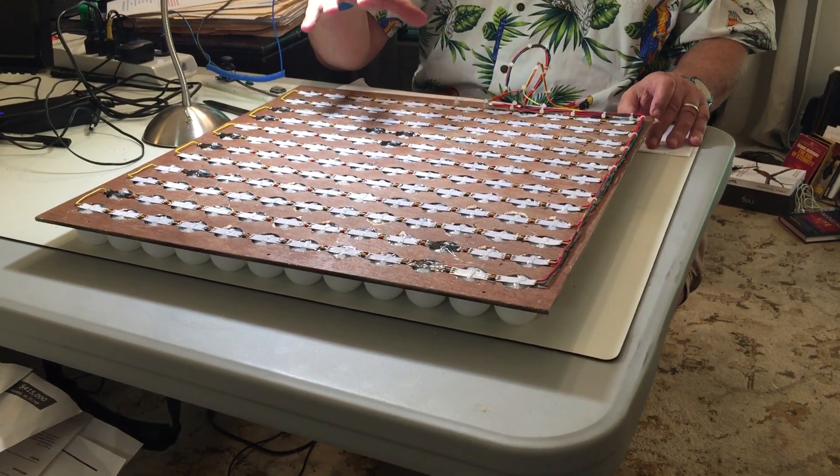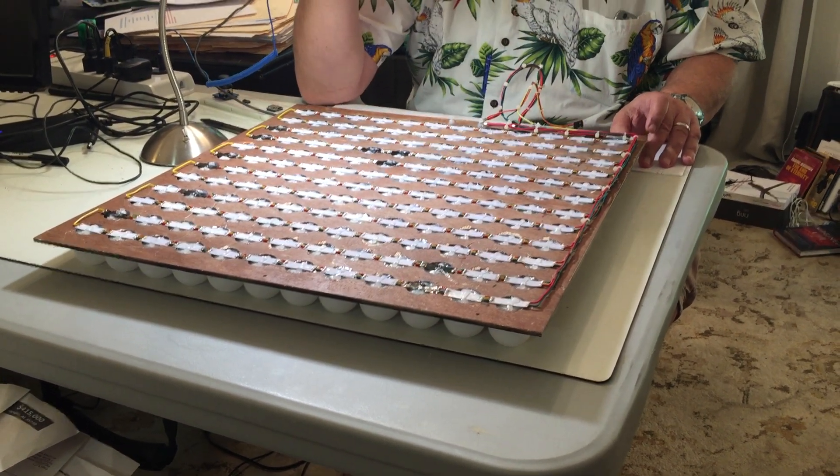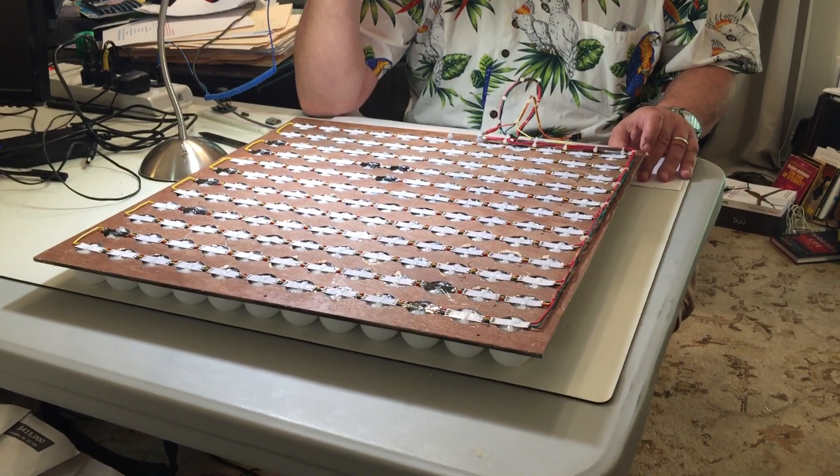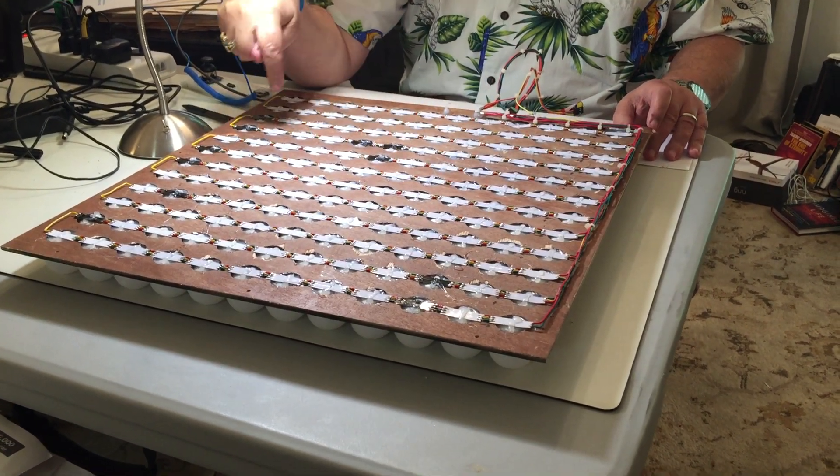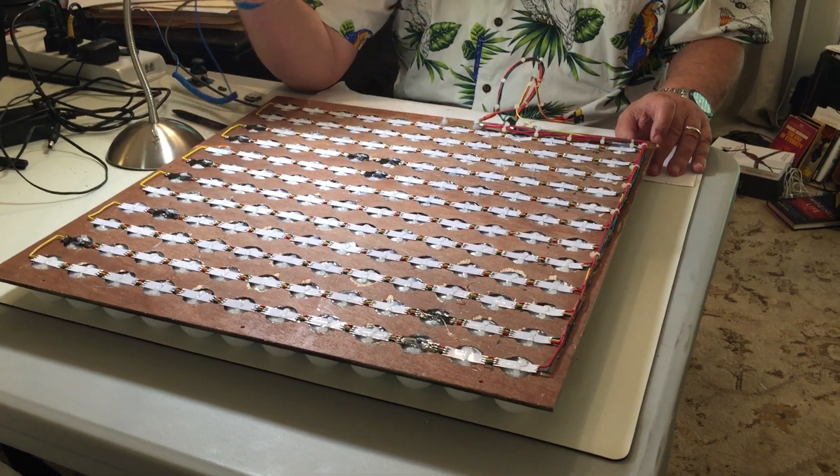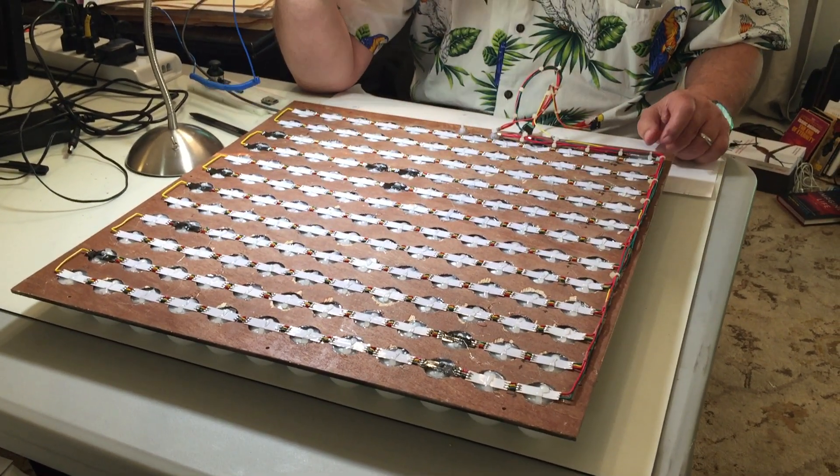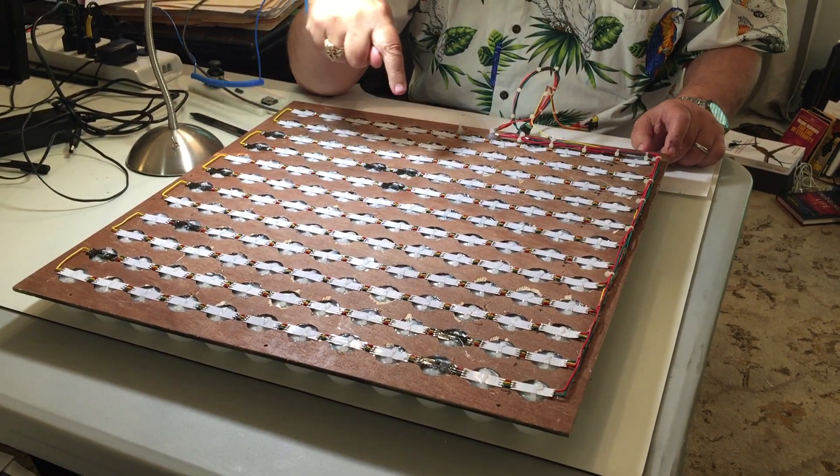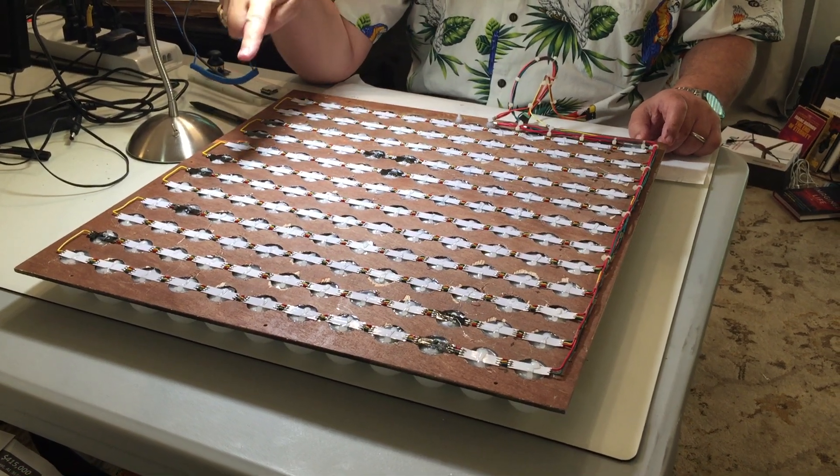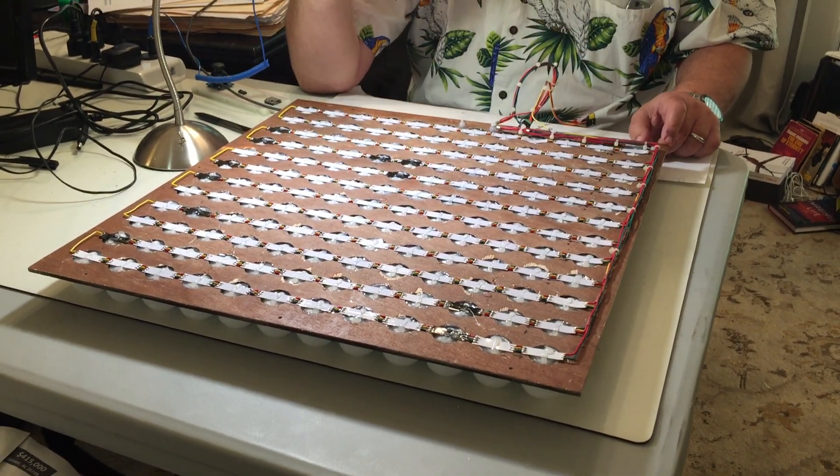Here we see the back of the 12x12 ping pong ball array all wired up. The black pixels are ones that I had problems with - they failed for some reason or another. By using black tape, that helps me see which ones I've replaced and what I've already done.